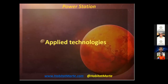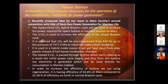Now coming to the applied technologies for power production in our power station. I recently proposed an idea at the Mars Society Annual Convention with my team — titled 'Next Generation Power Generation for Martian Life.' We use the supercritical Brayton cycle to produce the power required for a space habitat or crewed Mars mission. The SCO2 cycle is used to increase the efficiency of the simple Brayton cycle. We use it here because we have an abundance of CO2 in the Martian atmosphere.